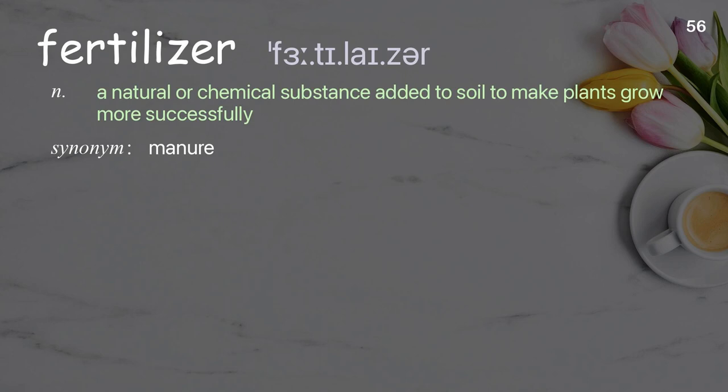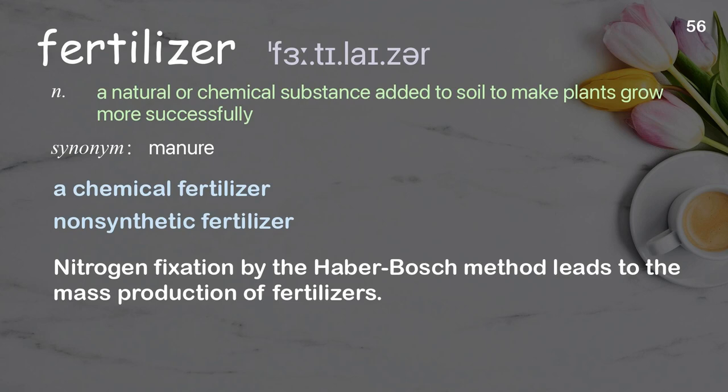Fertilizer: A natural or chemical substance added to soil to make plants grow more successfully. Examples: a chemical fertilizer, non-synthetic fertilizer. Nitrogen fixation by the Haber-Bosch method leads to the mass production of fertilizers.